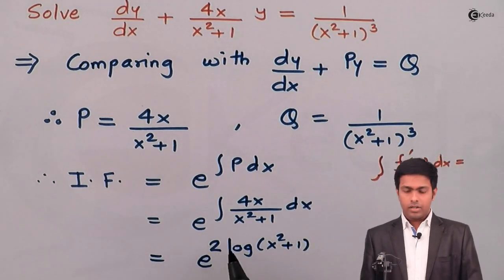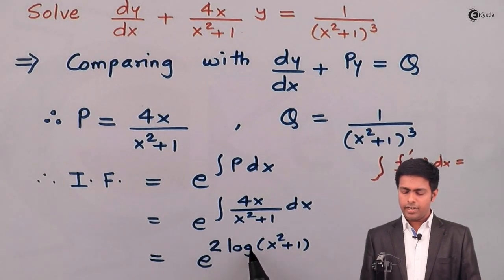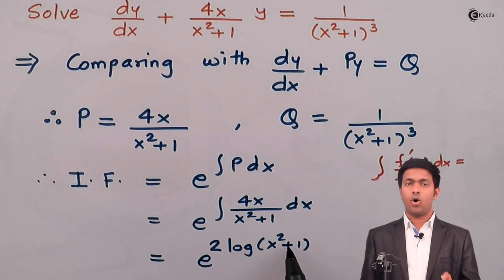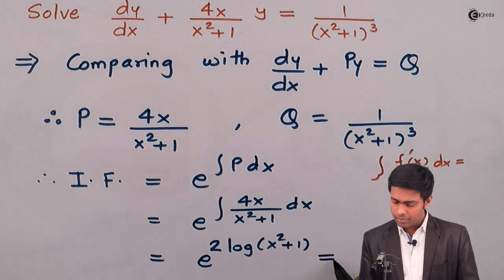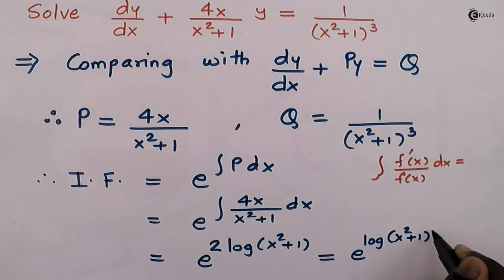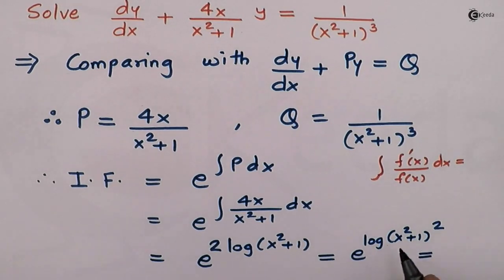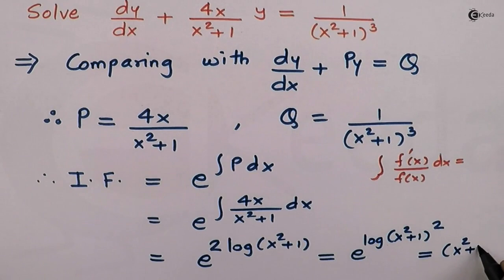Now I can apply the property that b·log(a) = log(aᵇ). So that becomes e raised to log(x² + 1)². And since e and log cancel, this becomes (x² + 1)². So this is the value of the integrating factor.